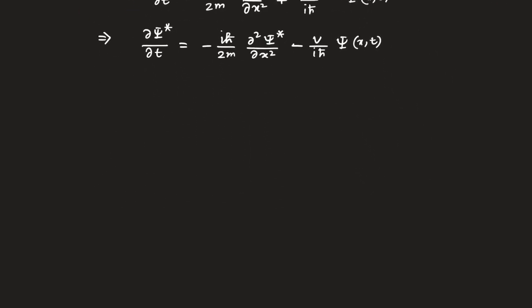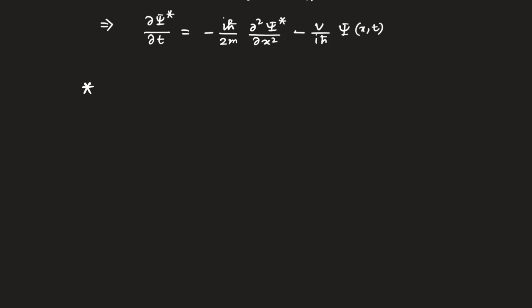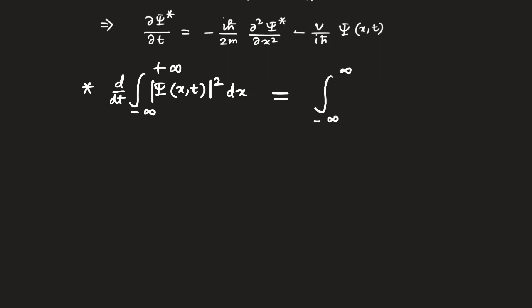Now we have to verify whether the quantity d/dt of the integral from minus infinity to plus infinity of |ψ(x,t)|² dx is the same as the integral of del/del t of |ψ(x,t)|² dx. In principle they should not be equal, but in quantum mechanics this always matches.